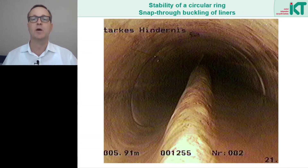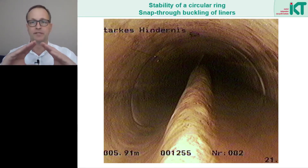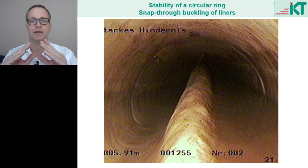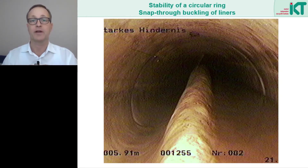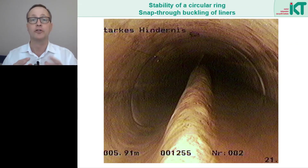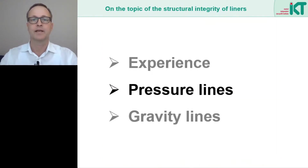In this picture we see what happens when the liner can no longer withstand the external pressure. The pressure is highest in the bottom of the pipe and that is where the liner is pushed upwards. At extremely high pressures the liner then fails as we see in the picture. The liner should neither buckle under external pressure as in this picture, nor should it burst apart under internal pressure.